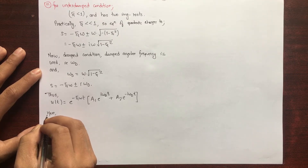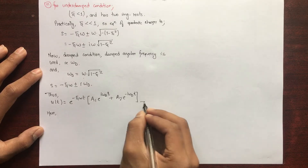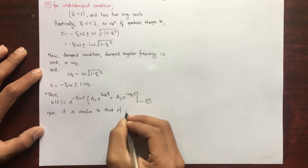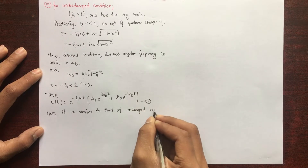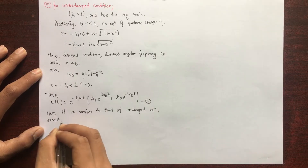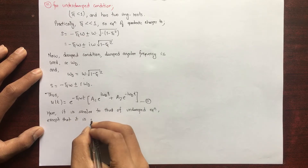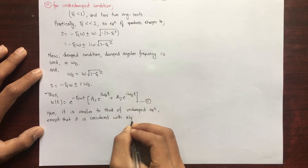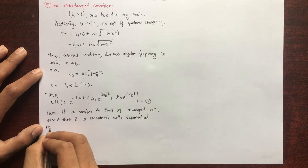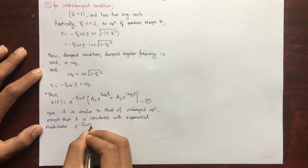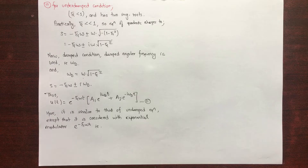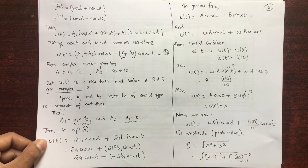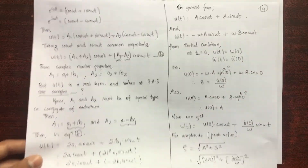Here we make a quick observation. Comparing with the equation of undamped free vibration, we find the general equation is similar to the undamped equation — except it is multiplied by the exponential term e^(−ξωt). That is the key difference: in the damped case, the vibration or oscillation decays exponentially.